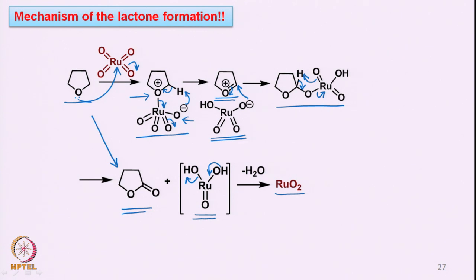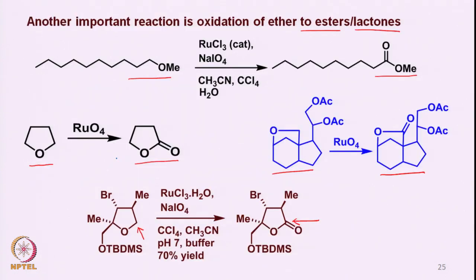For example, a substrate of this kind goes to the corresponding lactone, and another type of substrate goes to the corresponding lactone as well. Therefore, this is a very useful conversion of ethers to the corresponding oxidized esters or lactones, depending on whether the ether is acyclic or cyclic.